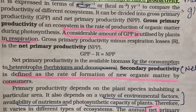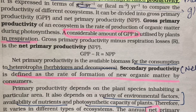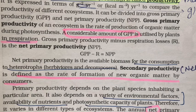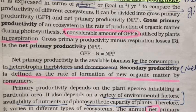Productivity can be gross primary productivity (GPP) or net primary productivity (NPP). GPP is the total amount of organic matter produced at the first trophic level — the autotroph level. If we subtract the respiration losses from GPP, we get the net primary productivity. The units remain the same: grams per meter square per year, or kilocalories per meter square per year.